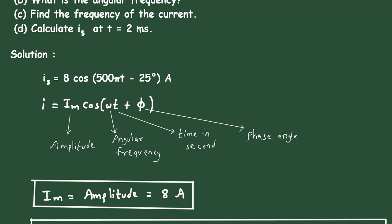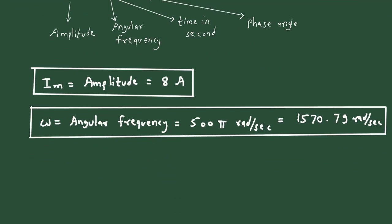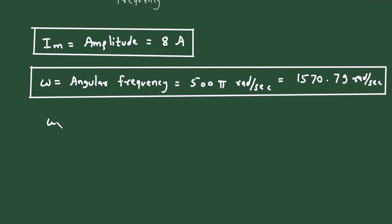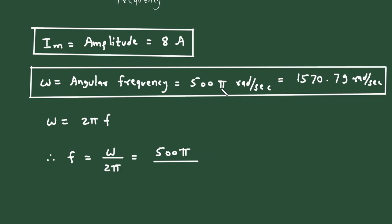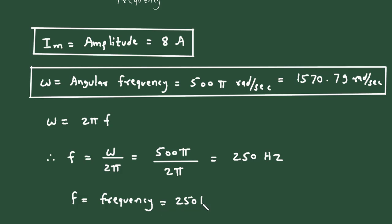Next we have to find the frequency of the current. We know that ω = 2πf, so therefore f = ω / 2π. Substituting, f = 500π / 2π — the π cancels — giving 250. Since it is frequency, the unit will be hertz. Therefore f equals 250 hertz.